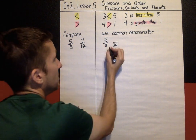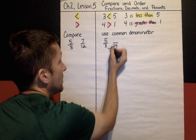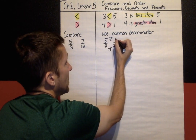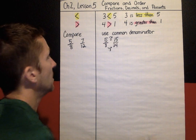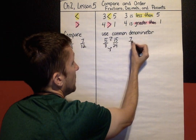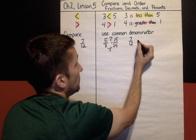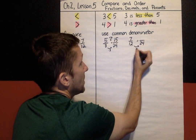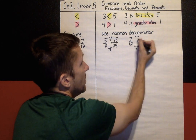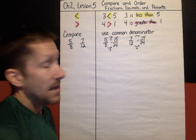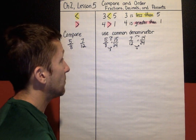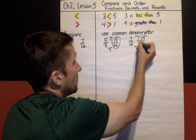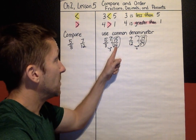Here's five-eighths. How did I go from eight to twenty-four? I multiply by three, and I also have to multiply the numerator by the same thing — I get fifteen twenty-fourths. I'll do the same thing with seven-twelfths, changing that into twenty-fourths. How did I go from twelve to get to twenty-four? That was times two, so seven times two is fourteen. Now I've got common denominators — fifteen twenty-fourths compared to fourteen twenty-fourths. I know this one is bigger.